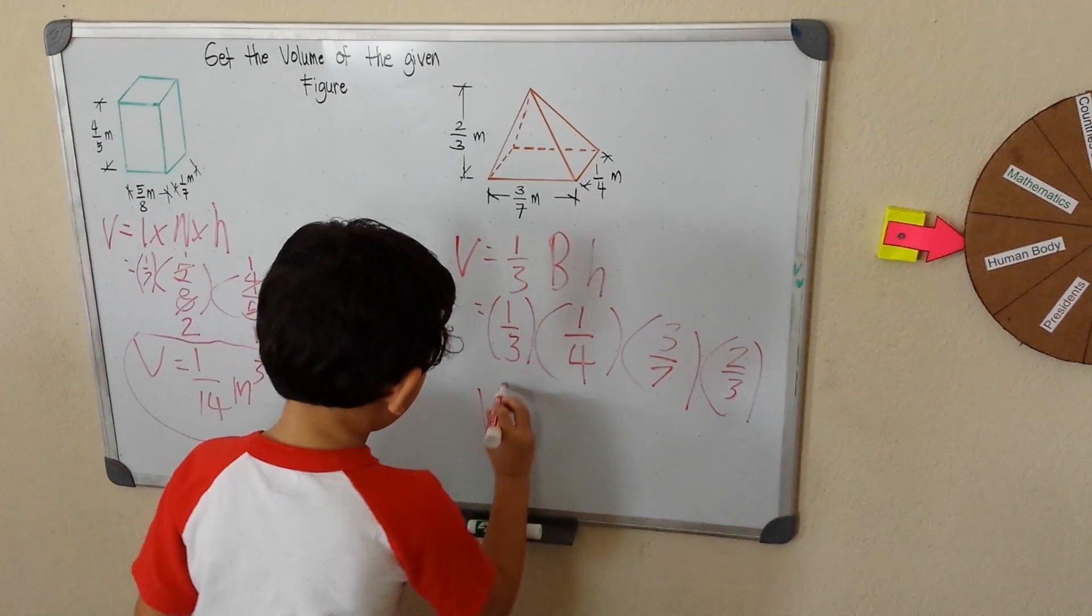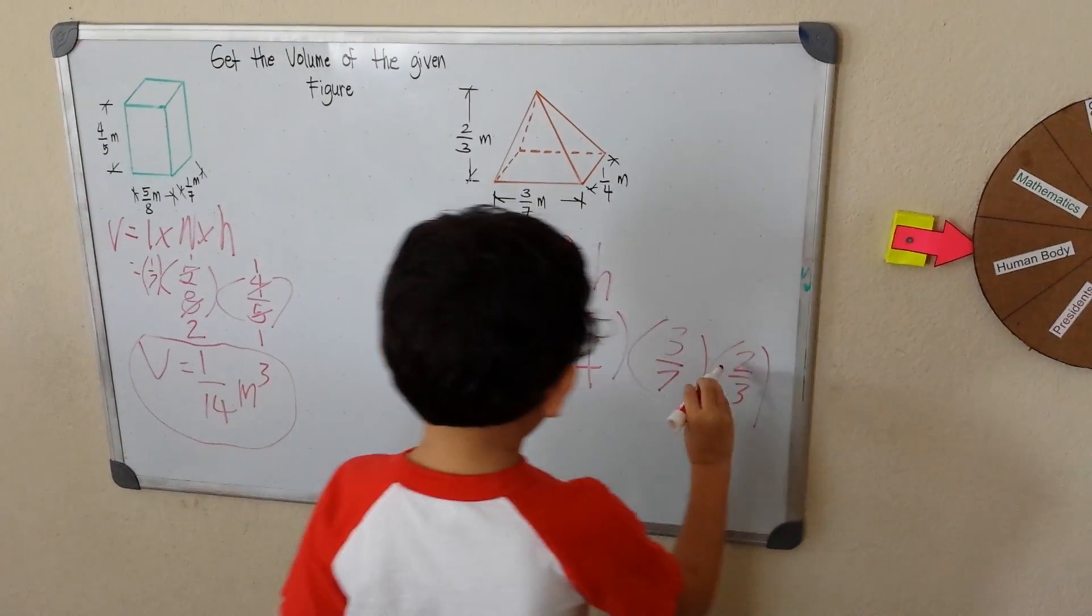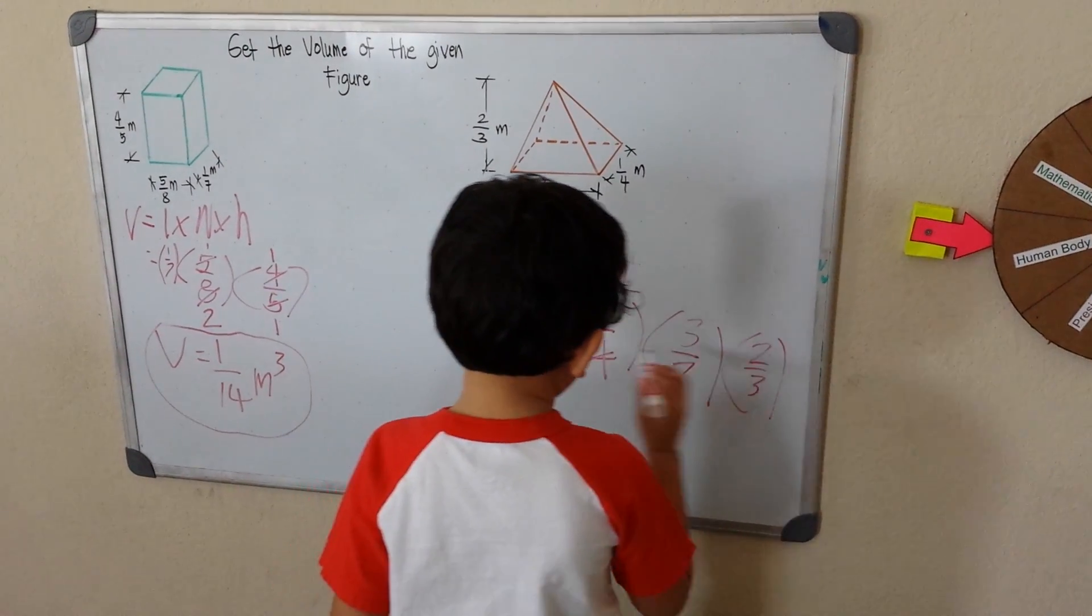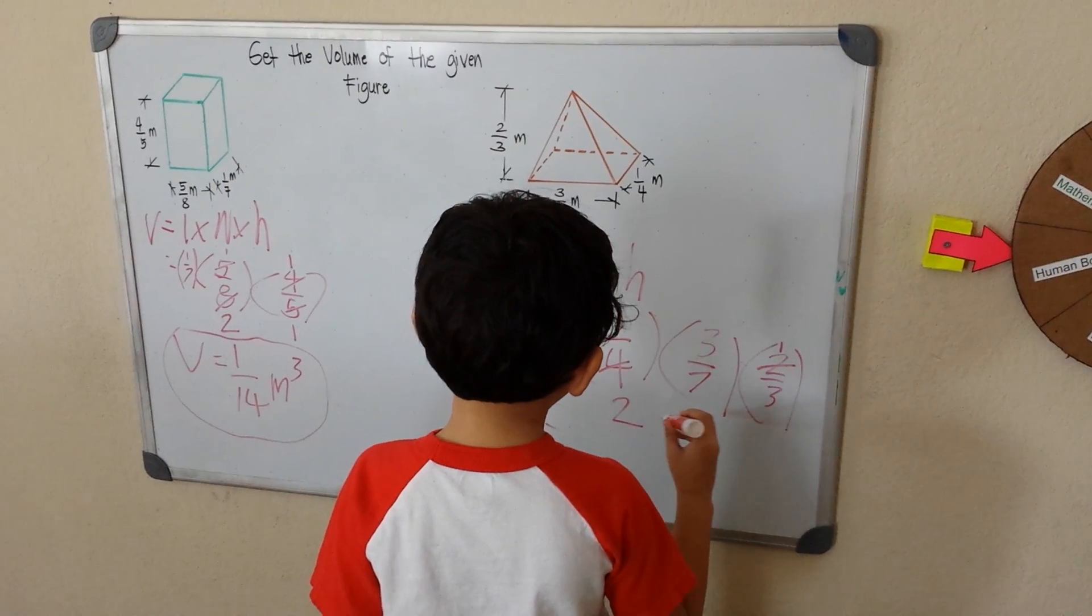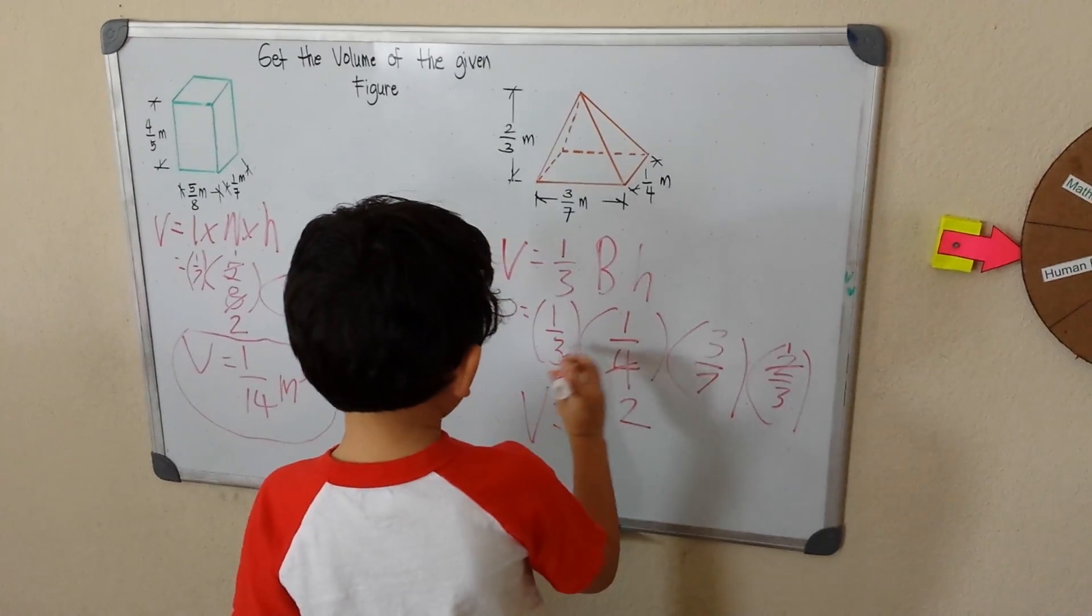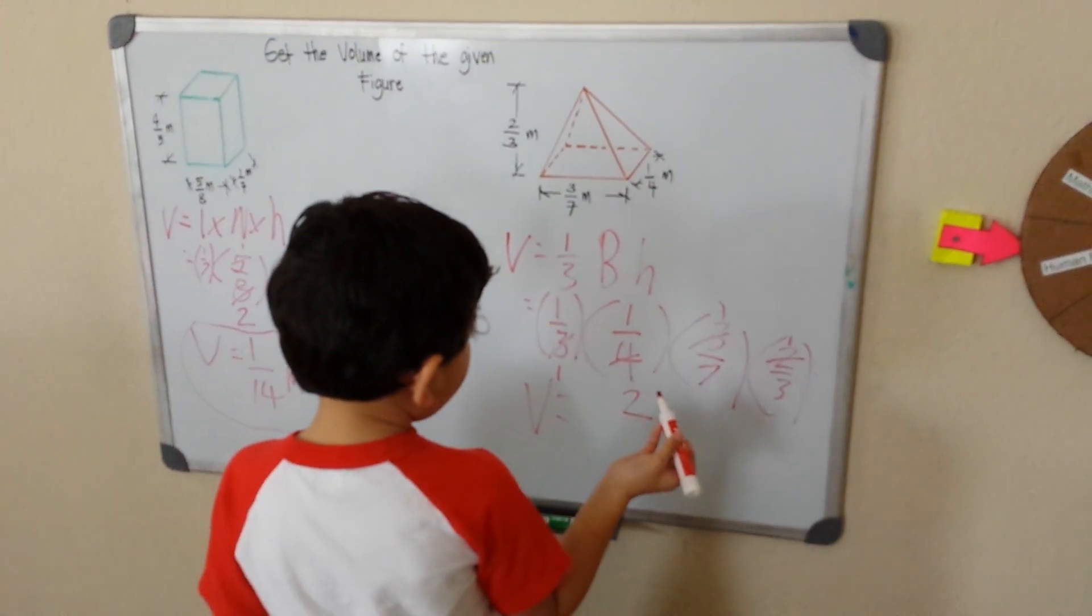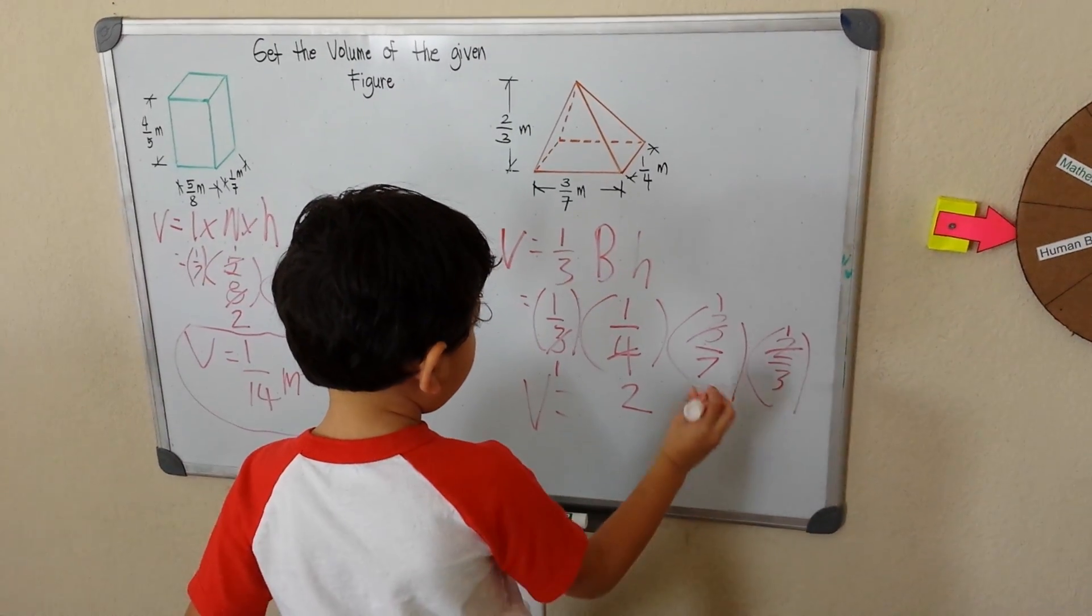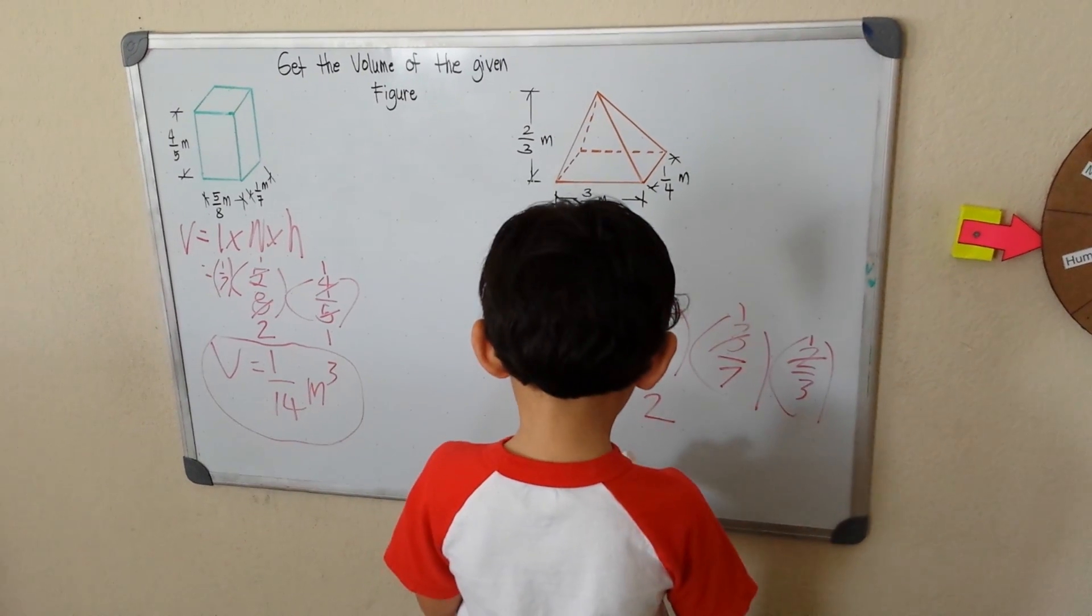So what can we cross cancel now? Let me see. We're going to cross cancel 2, 4, 2, 1, and 2. There's a lot of things to cancel. 3 and 3, of course, 2 and 1. Anyone else? That's it.